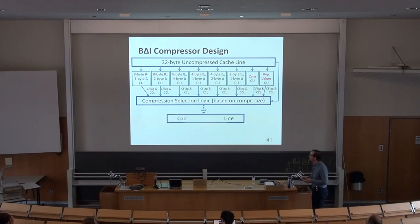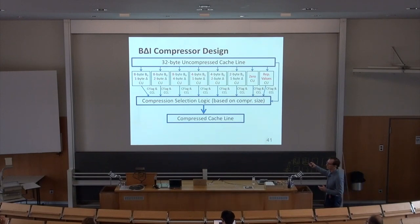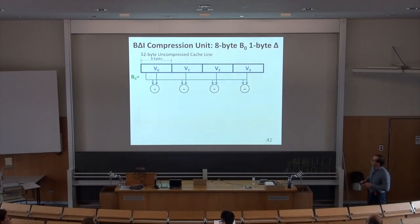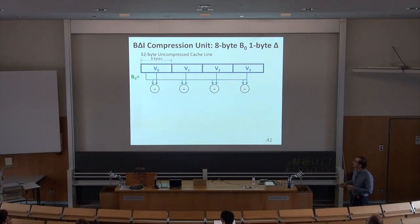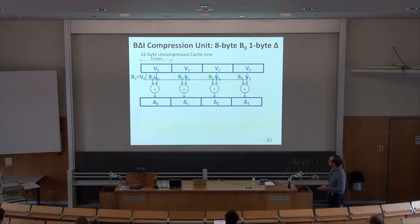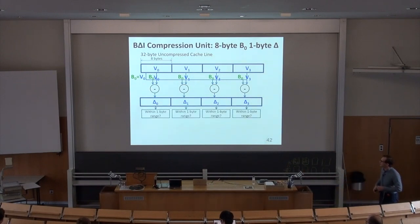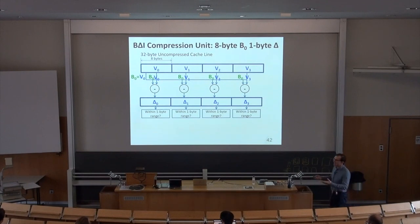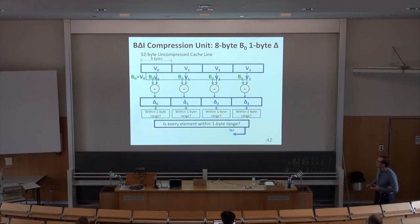Each compression unit performs vector subtraction: pick the base, subtract it from each element, and check whether all deltas fit in the target size. If every element is within range, the unit outputs the compressed cache line; otherwise it signals not compressible. The decompressor is the inverse: a masked vector addition where you add the base (or zero for the implicit base) to each delta to reconstruct the full uncompressed line.